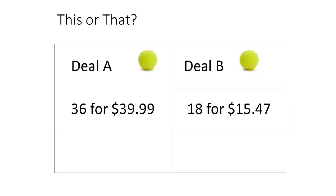Right away we think Deal B is the way better deal — unless you're selling them. We can't ask kids to think and then be unsatisfied with how they think. In this routine, you think to yourself, talk with a partner, and share your decision and reasoning. Maybe some thought Deal A wasn't a good deal because you're paying more than a dollar per ball, whereas Deal B you're paying less than a dollar a ball. Did anybody think about it differently — perhaps by doubling?